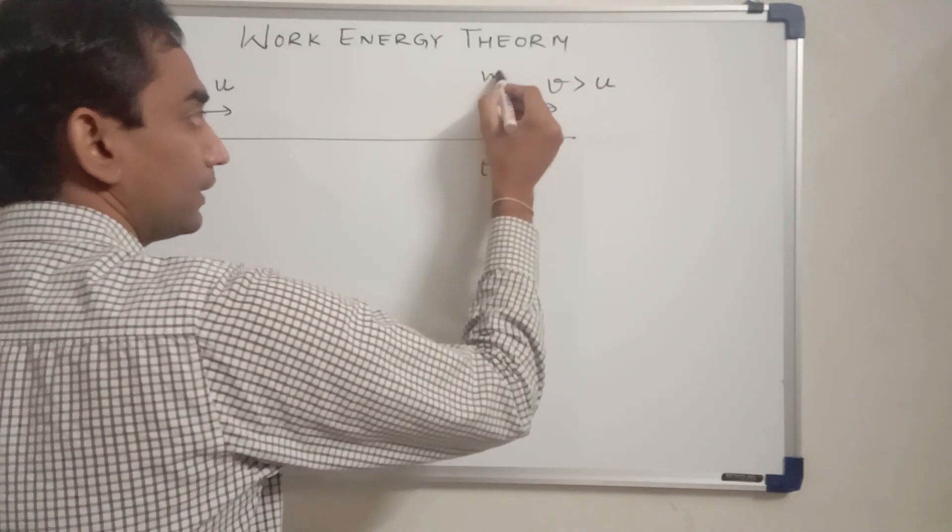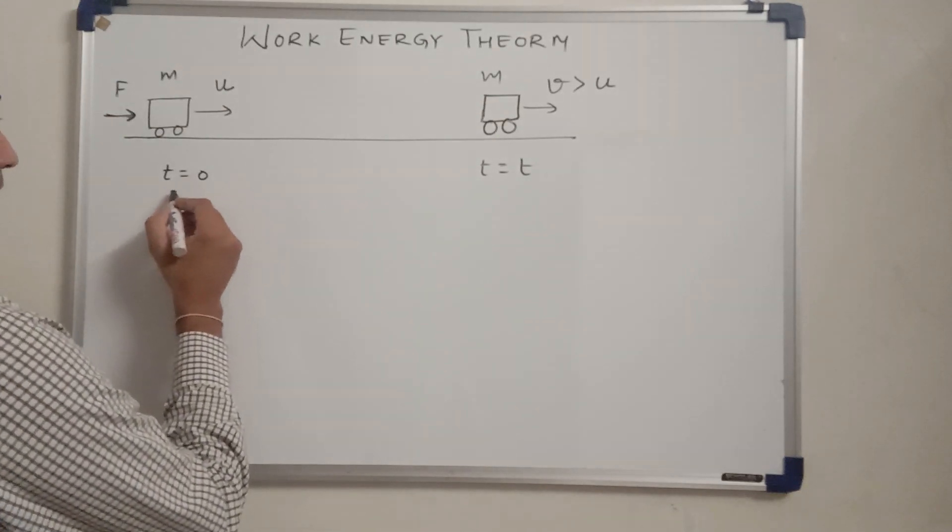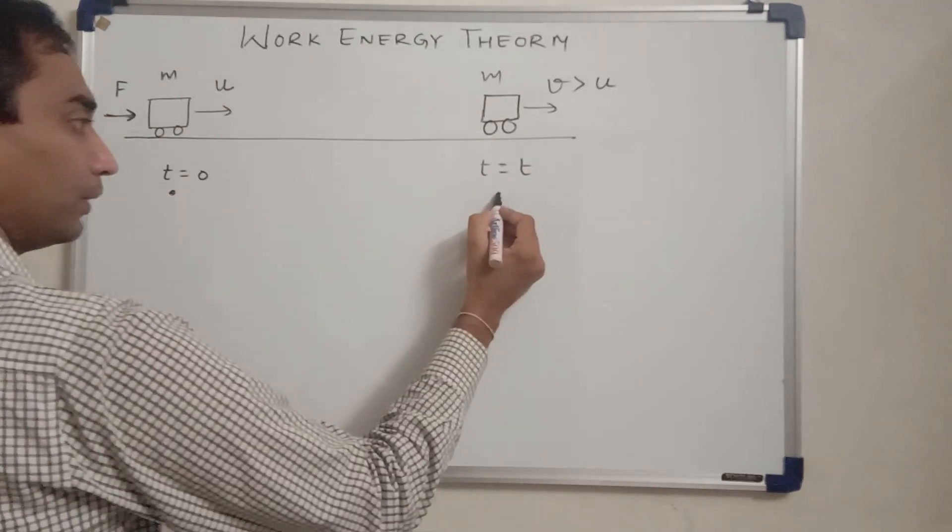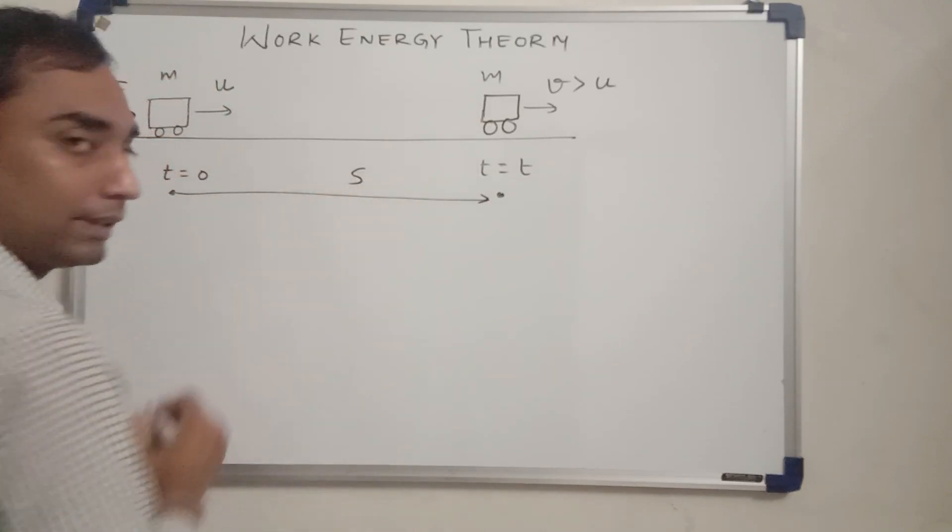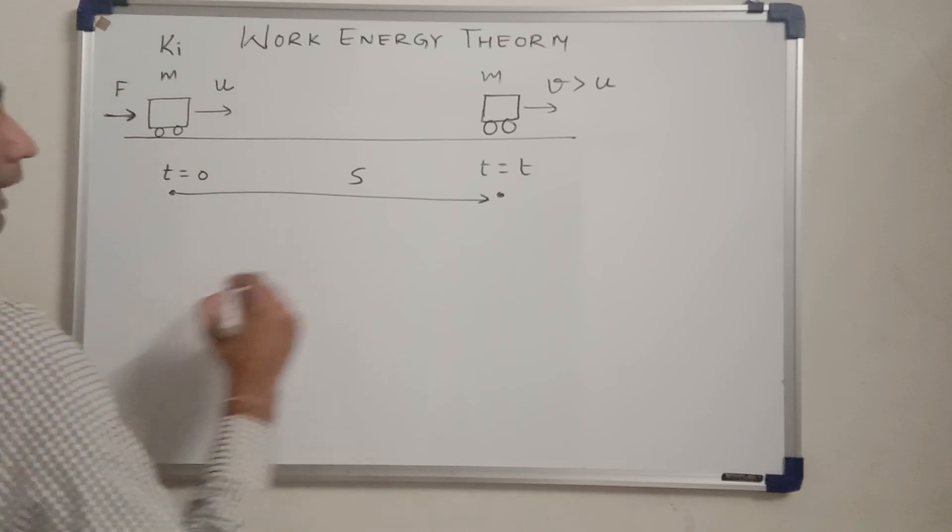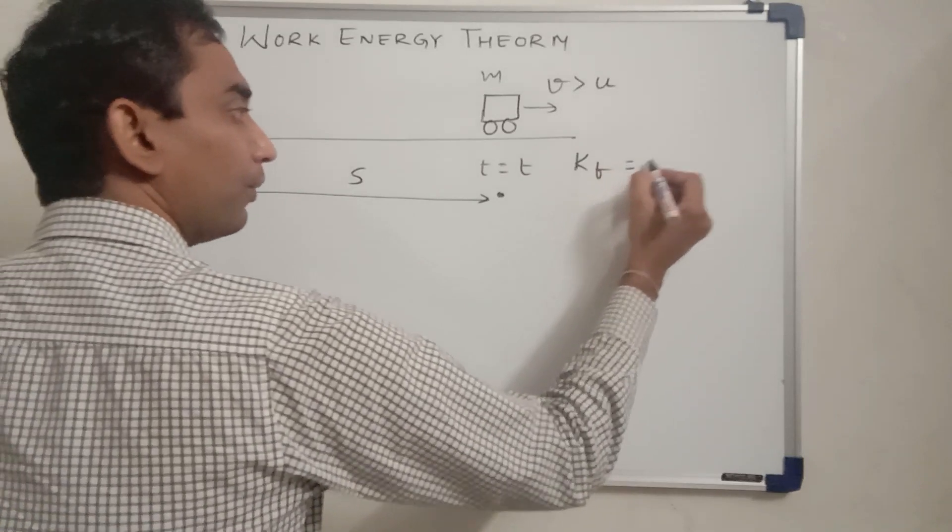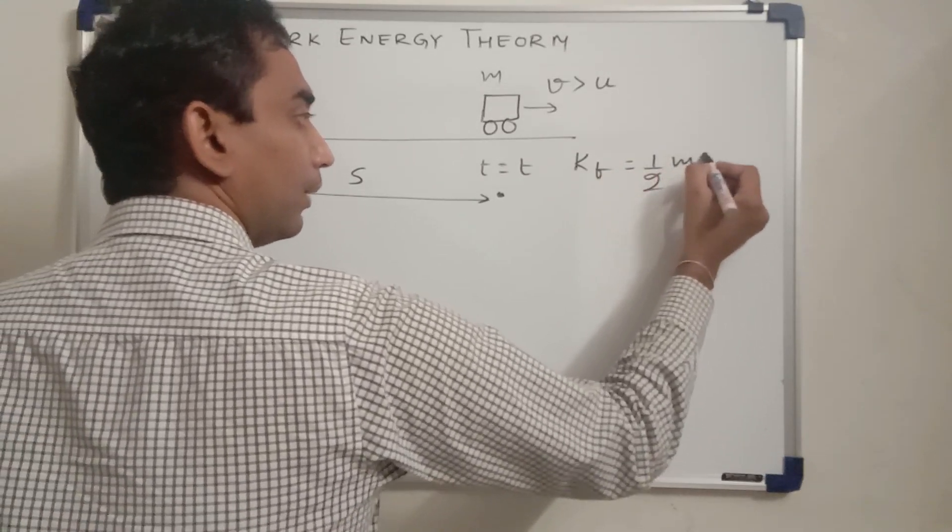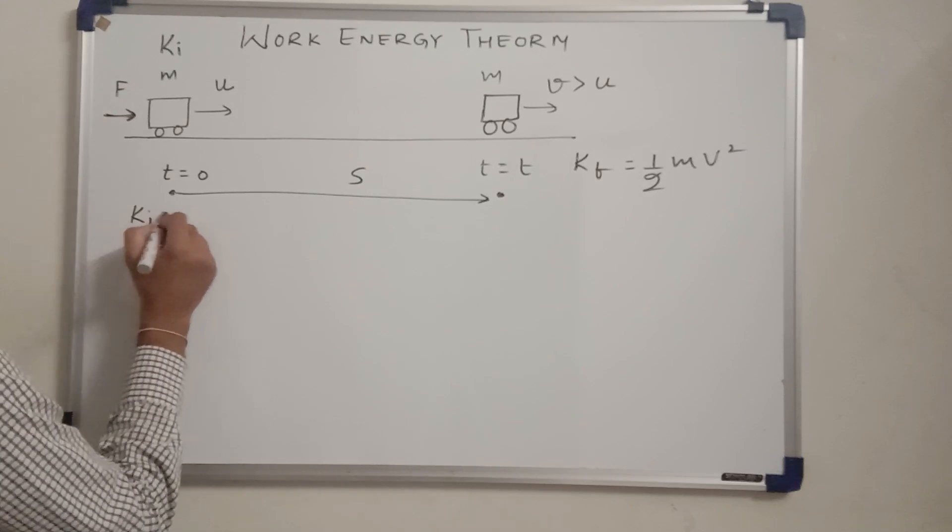The mass remains constant. The displacement traveled by the car from here to here is, let us call s. Let me call the kinetic energy over here Ki and the kinetic energy over here as Kf. The value of Kf will be equal to half mv² and the value of Ki will be equal to half mu².